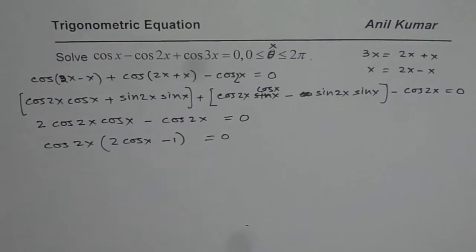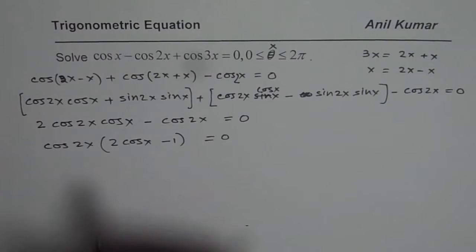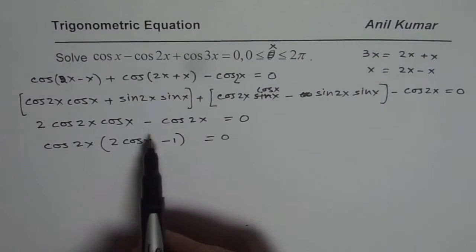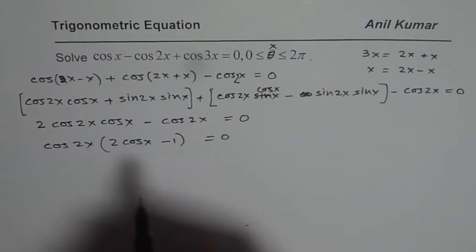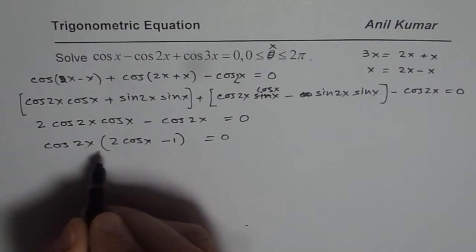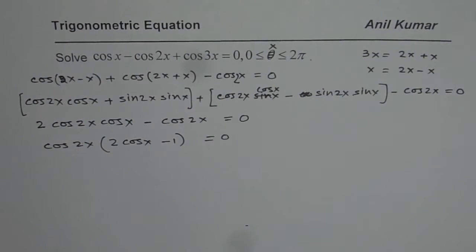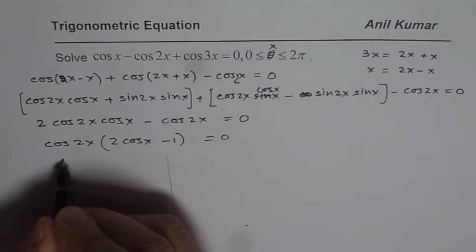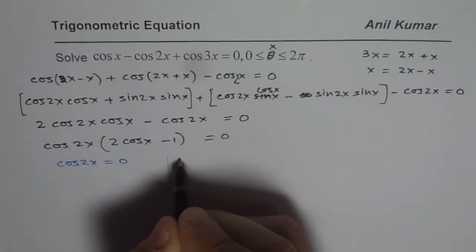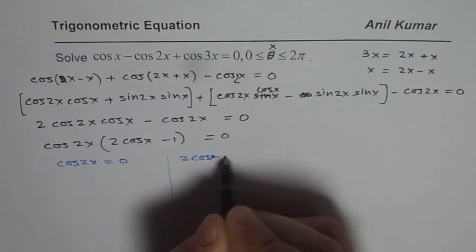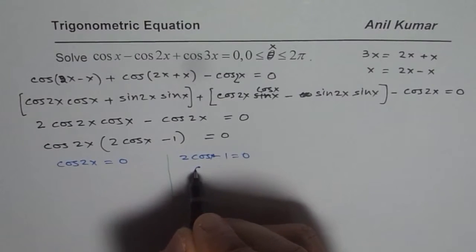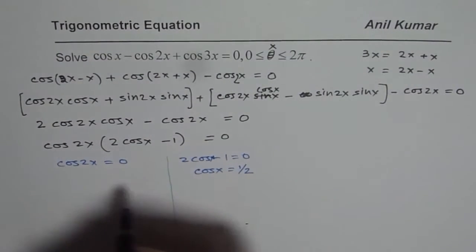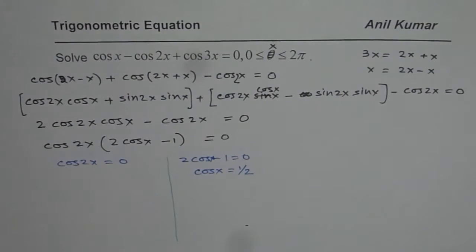We are able to factor the given trigonometric equation in these few steps. And that is the beauty of this solution. Now we have two sets of solutions we are looking for. When cos 2x equals 0 or 2 cos x minus 1 equals 0, that means cos x equals 1/2.